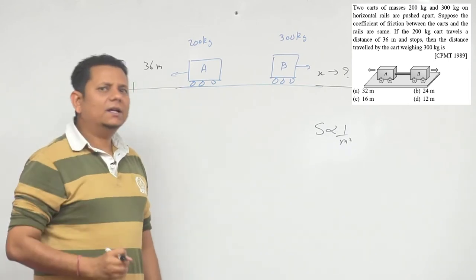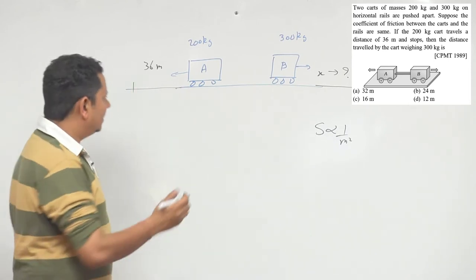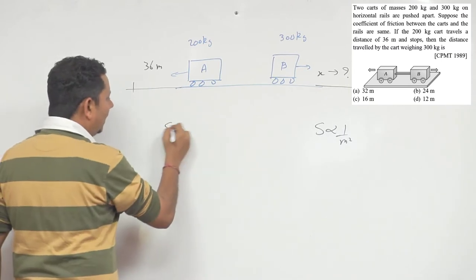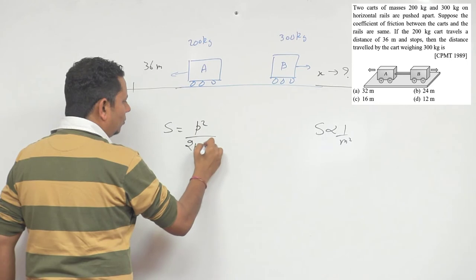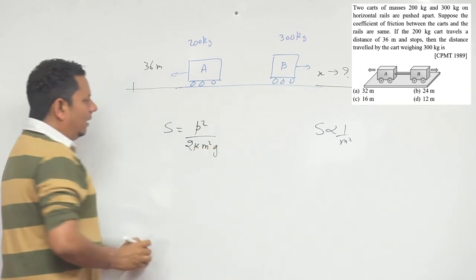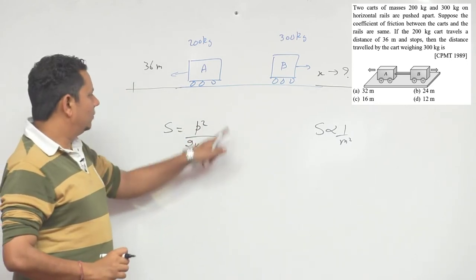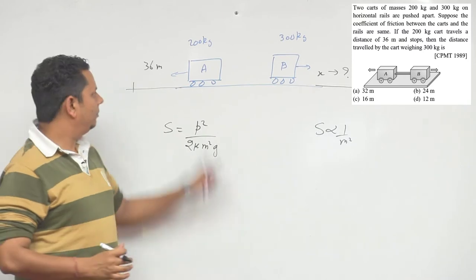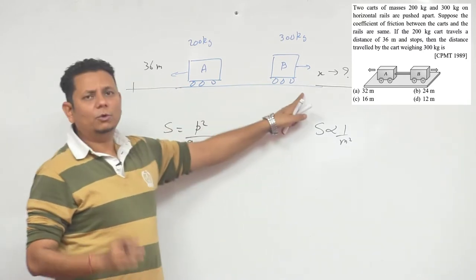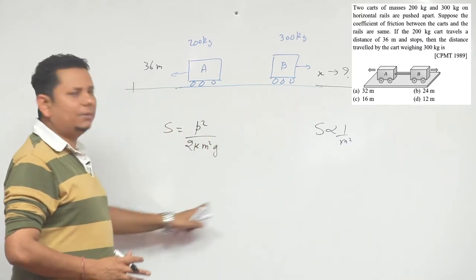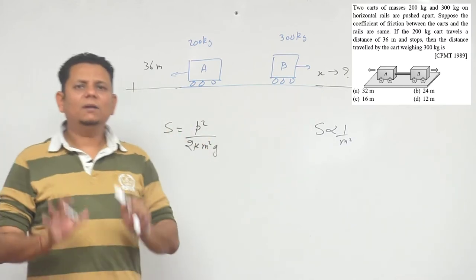This was under a very specific condition. Let me remind you of the result. You had written s will be equal to p square divided by two mu m square g. In that case, when we were talking about momentum p, then in this case if the momentum of this and this are equal, then this condition you can apply here.